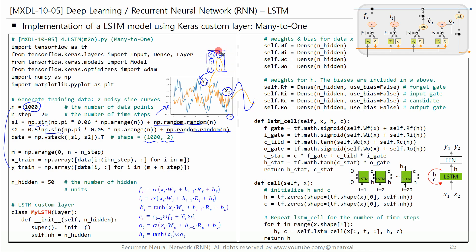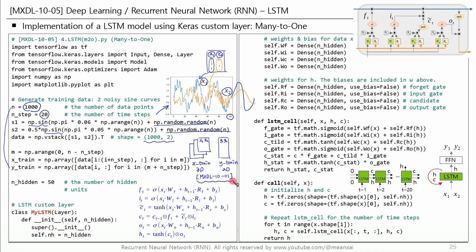We use this data to construct a dataset for a many-to-one LSTM model. The number of time steps is set to 20, i.e. 20 time periods. The dataset looks like this: X-train has a 3D structure, and Y-train has a 2D structure. This dataset is for time series forecasting. Please refer to the first video in this series for how to construct this dataset.